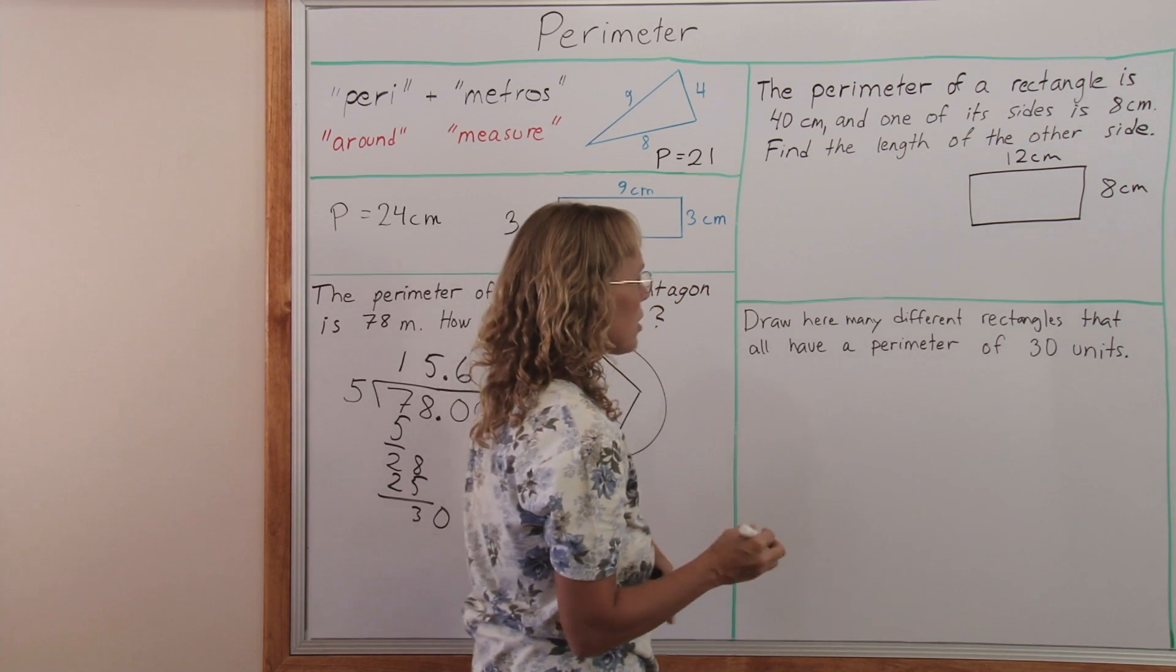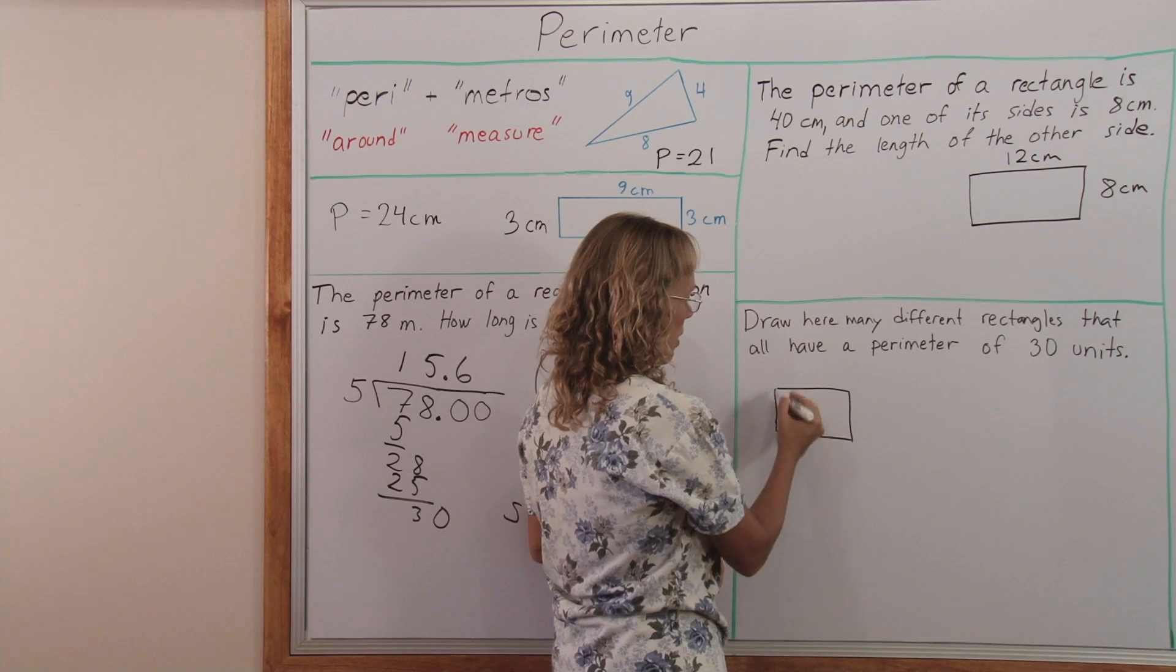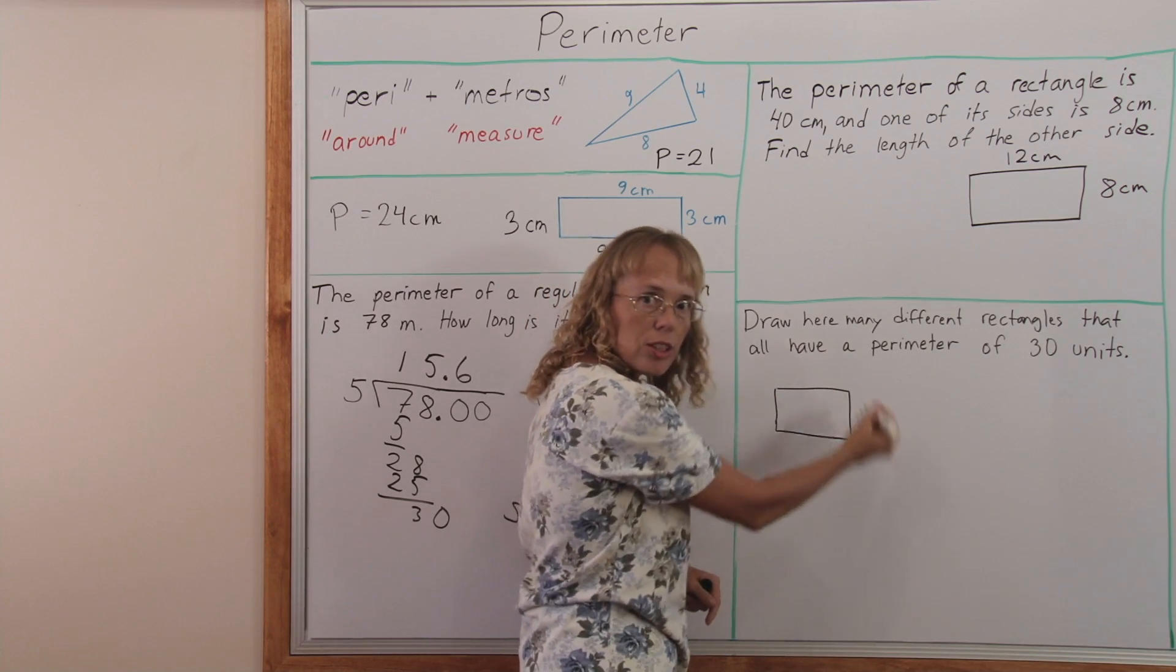The perimeter is 30. Let's draw our sketch here, a rectangle. All the way around is 30.